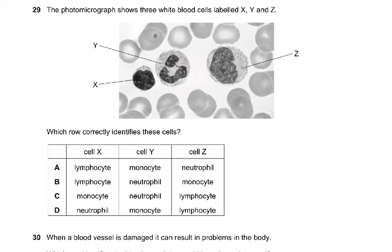Question 29. The photomicrograph shows three white blood cells labeled X, Y and Z. To identify them, the one with a kidney-shaped nucleus — Z — has to be a monocyte. So Z is a monocyte, and that's how you figure it out. The answer to question 29 is B.